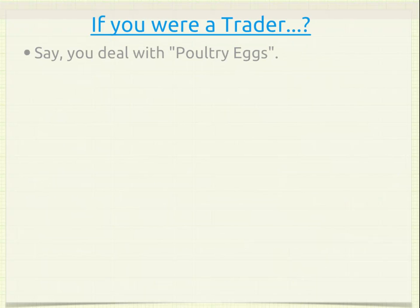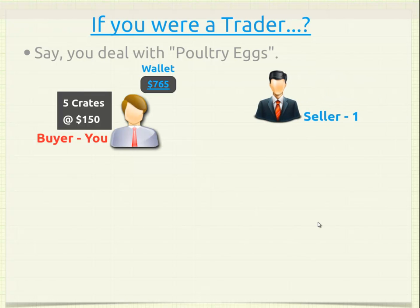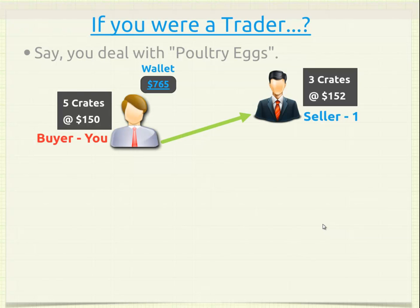Now consider the case where you were a trader dealing with poultry eggs. You are a buyer interested in buying 5 crates of eggs at $150 each. Your wallet is buoyant enough — you have $765. Seller 1 comes along and says: I've got 3 crates at $152, which happens to be the best price in the market. You agree and buy 3 crates for $456.